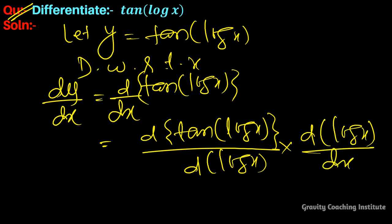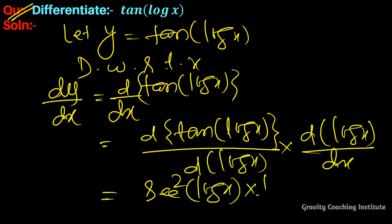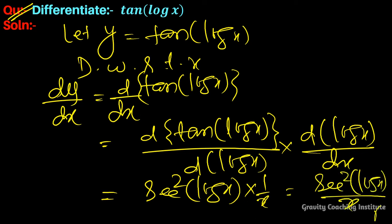The derivative of tan is sec squared, so we get sec²(log x), and the derivative of log x is 1/x. Therefore, dy/dx = sec²(log x) / x. That is the answer.